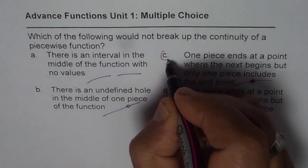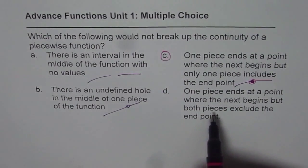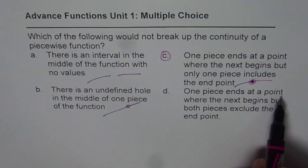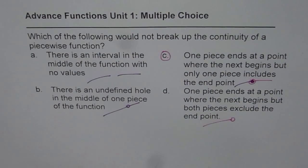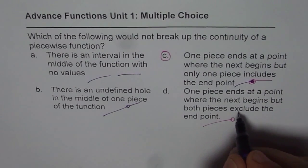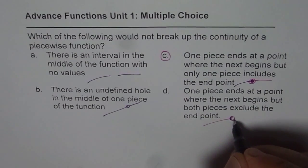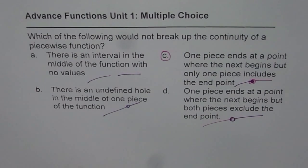So this is definitely continuous. For the next one, one piece ends at a point, let's say it ends at a point where the next begins, but both pieces exclude the end point, so both exclude, so hole remains there.